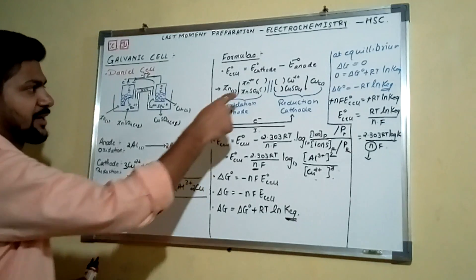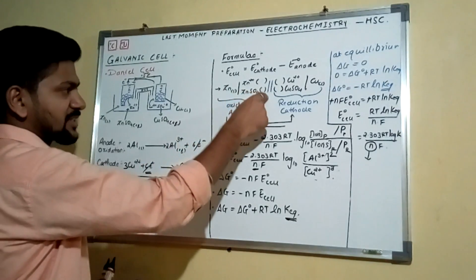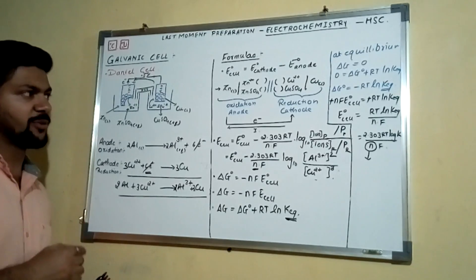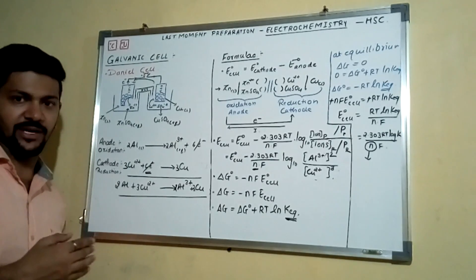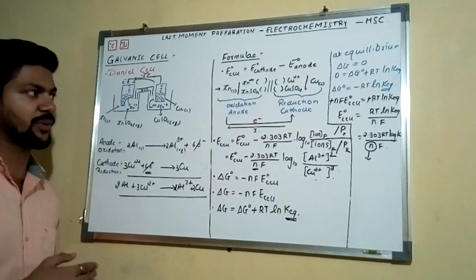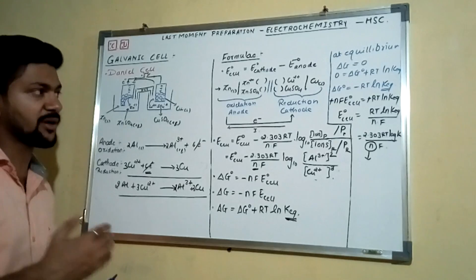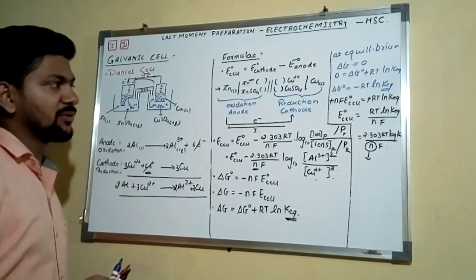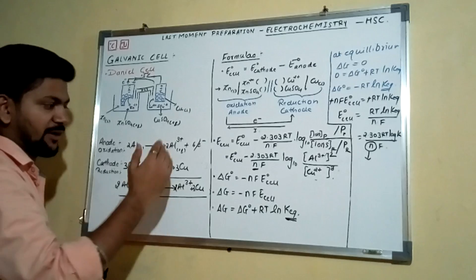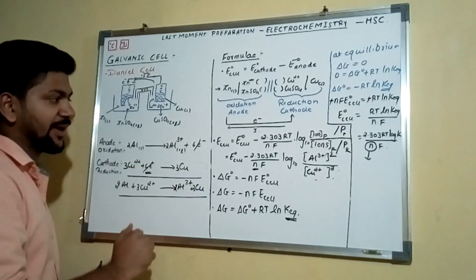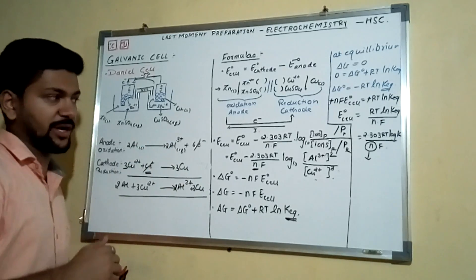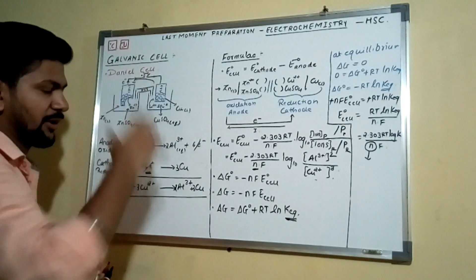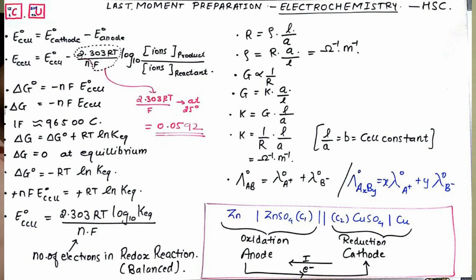This information is sufficient for solving all numericals related to galvanic cell and cell representation. If you look in your textbook, after numerical number 20, there are numericals on cell representation, finding E°cell, Gibbs free energy, and E_cell — these formulas will help you solve all of them.